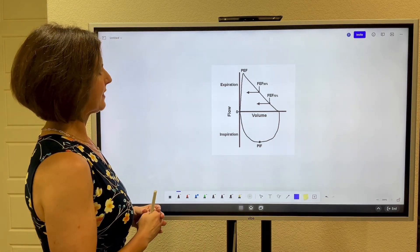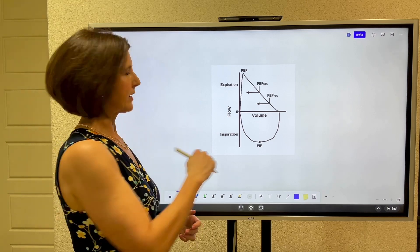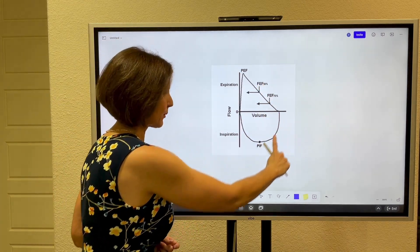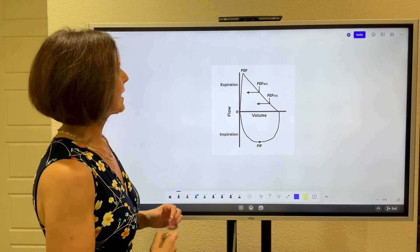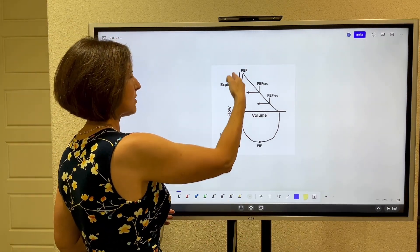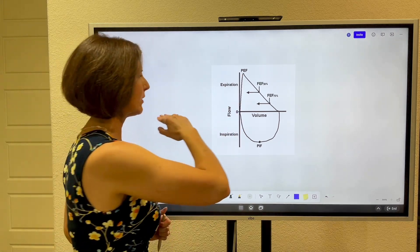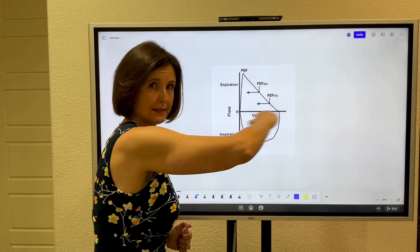So first of all let's just look at this loop. What we're doing is we're having the patient take a great big huge deep breath in. They're blowing it out as hard and as long as they can and then they're breathing in deeply again. And when they do that we are measuring the flow and the flow is on this vertical axis and we're actually comparing it to the volume that is on this horizontal axis.